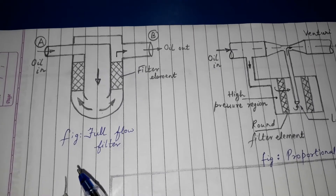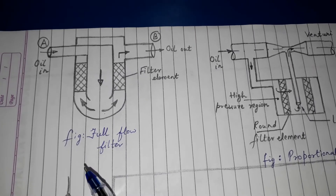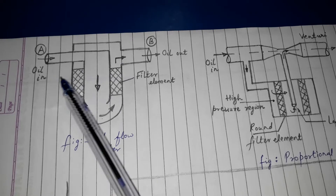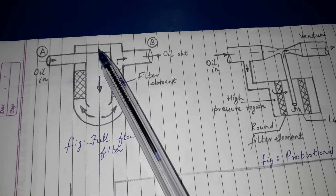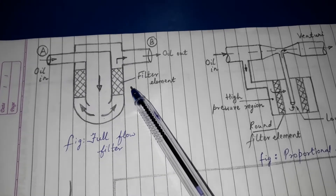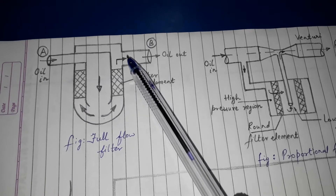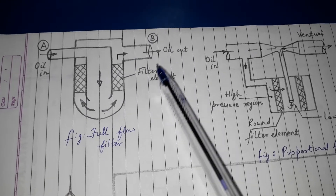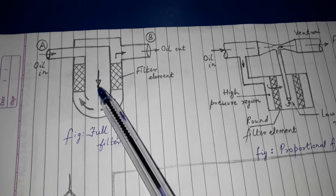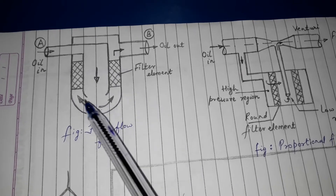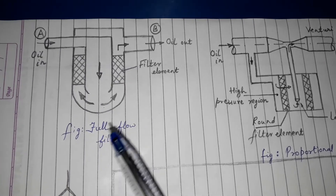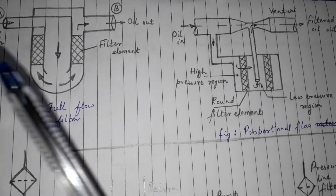In a full flow filter, oil comes in through port A, passes through the filter element, and goes out through port B. In this filter, all the flow passes through the filter element, hence it is called a full flow filter.